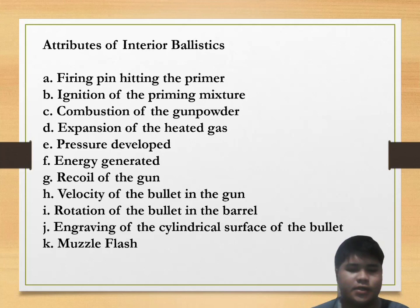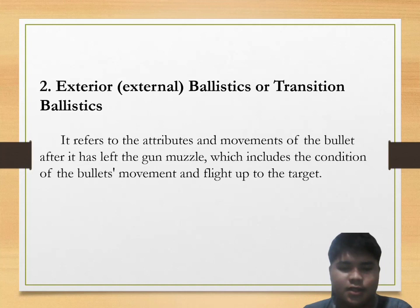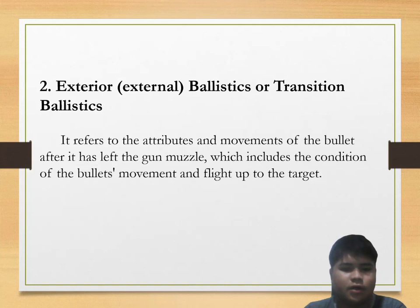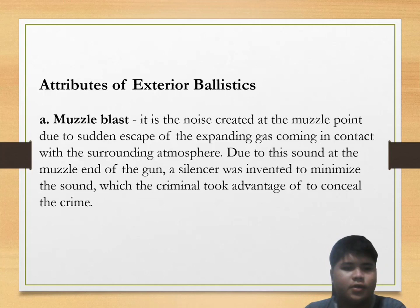Second is exterior or external ballistics, also called transition ballistics. It refers to the attributes and movements of the bullet after it has left the gun muzzle, including the condition of the bullet's movement and flight to the target. The first attribute is muzzle blast — the noise created at the muzzle point due to the sudden escape of expanding gas coming into contact with the surrounding atmosphere. Because of this sound, a silencer was invented to minimize it, which criminals later took advantage of to conceal crimes.